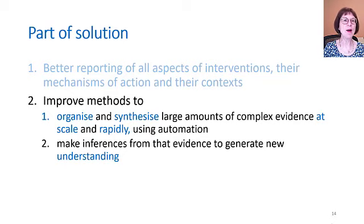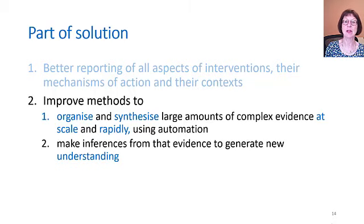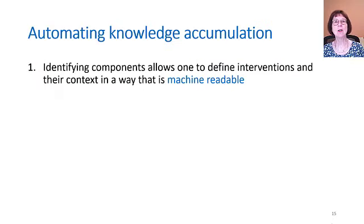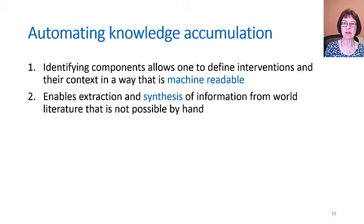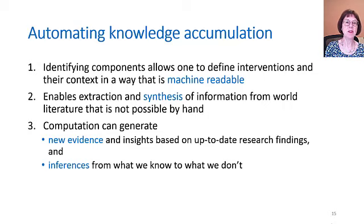I want to move on to improving methods to organise and synthesise large amounts of complex evidence at scale and rapidly using automation, and methods to make inferences from the evidence we have to generate new understandings. So: automating knowledge accumulation. We want to identify components allowing us to define interventions and their context in a way that is machine readable. This will enable extraction and synthesis of information from the world literature that's not possible by hand. Computation can generate new evidence and insights based on up-to-date research findings and inferences from what we do know to what we don't.